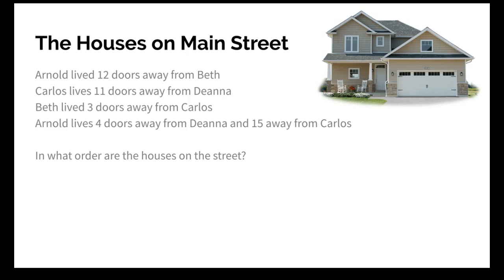We're going to do an example here talking about houses on a street. It takes the idea of making a gene map but relates it to something you can visualize a little bit better. We have four friends — Arnold, Beth, Carlos, and Deanna — and they live on a street. We're trying to figure out what order they live in and also how many houses are in between each person's house.